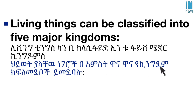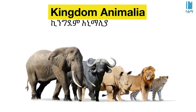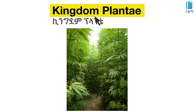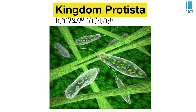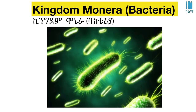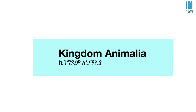We will learn about the five kingdom elements: Kingdom Plantae, Kingdom Fungi, Kingdom Protista, Kingdom Monera — which includes bacteria — and Kingdom Animalia, which includes animals.